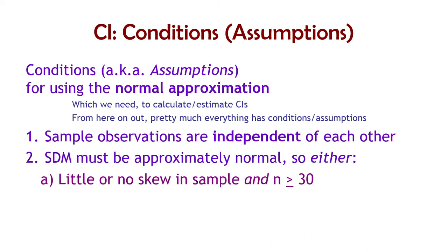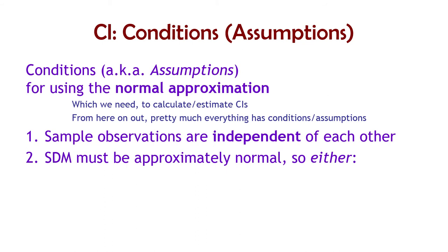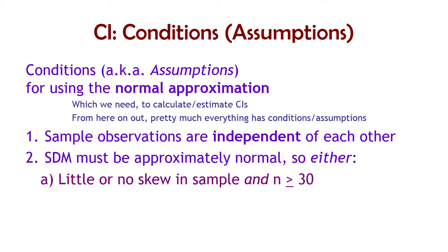Condition number two is that the sampling distribution of the means must be approximately normal — which makes perfect sense, since we're going to use the normal approximation to figure out areas in this sampling distribution. As a good rule of thumb, either there's not very much skew in your sample and n is greater than or equal to 30. It's actually okay to be less than 30 with your n, as long as there's no noticeable skew — no skew over about a half or one in any direction. The textbook is strict about 30, but if you have little or no skew in your sample, you're probably okay even with a sample size less than 30.